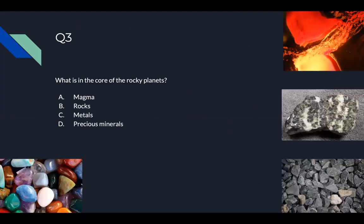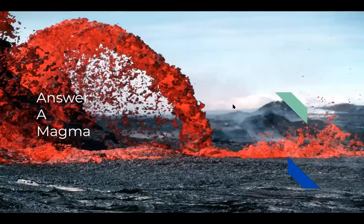Question three: what is in the core of the rocky planets? A — magma, B — rocks, C — metals, or D — precious minerals. Arnav, refrain from shouting out your answer — please type it in the private chat. Everyone who said magma, you are correct. Arnav, it is magma.